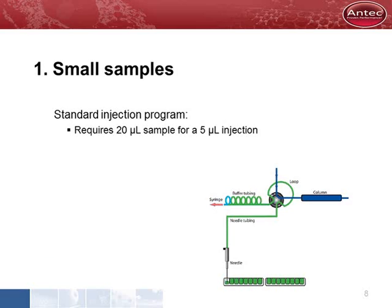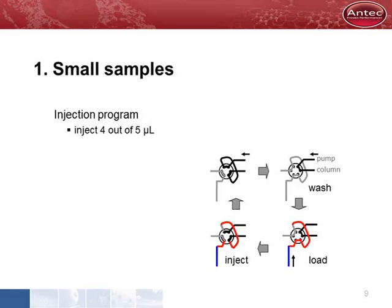Our first requirement is about working with small samples. A standard injection cycle to fill a 5 microliter loop uses about 20 microliter sample to fill the injection flow path. We developed an injection program that enables us to inject 4 microliter out of 5 microliter sample in a reproducible way. Instead of filling the entire sampling flow path, we pick up a small volume and move that to the injection loop.